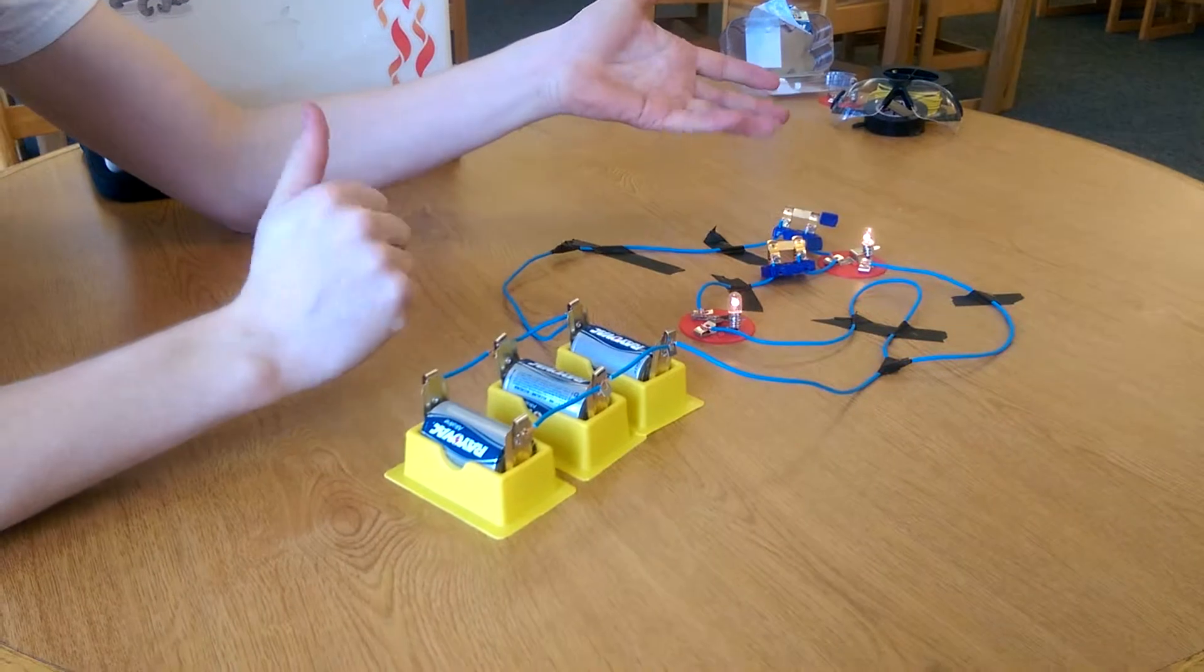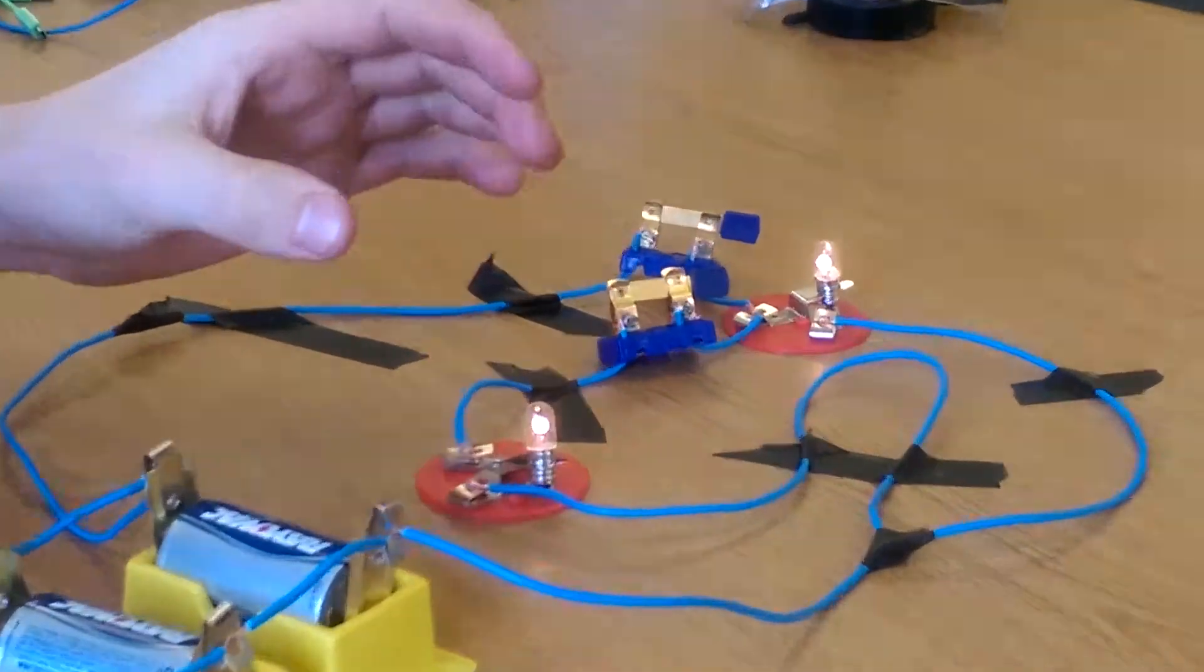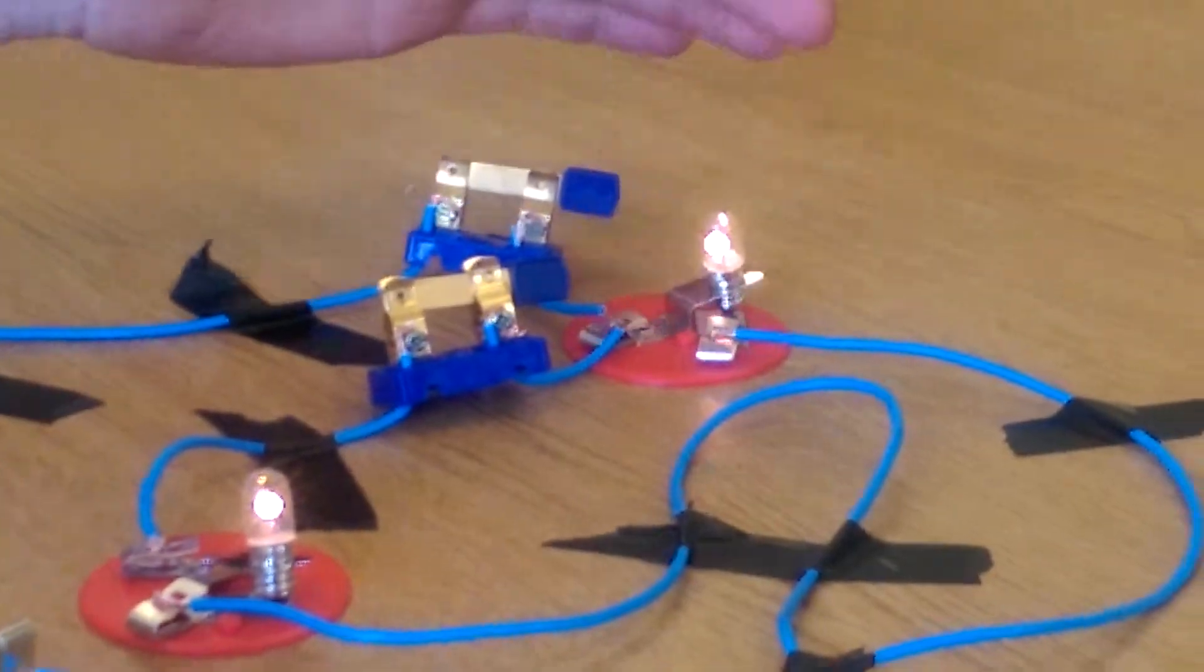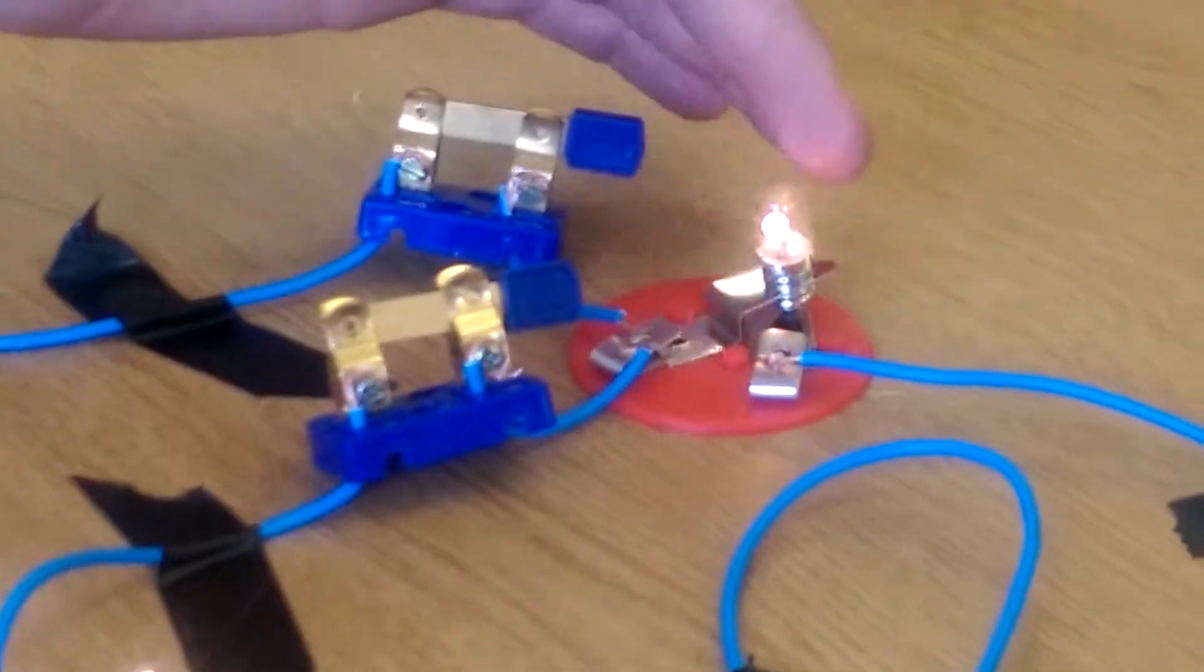So in the parallel circuit, the first light is always going to be the brightest. The second one is not going to be as bright. So if you come in and see here, this light is slightly brighter.